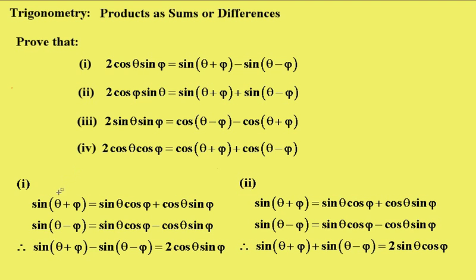The first one, what we do is just use our normal expansion of sin(θ + φ) = sin θ cos φ + cos θ sin φ. And the other one, sin(θ - φ) = sin θ cos φ - cos θ sin φ.